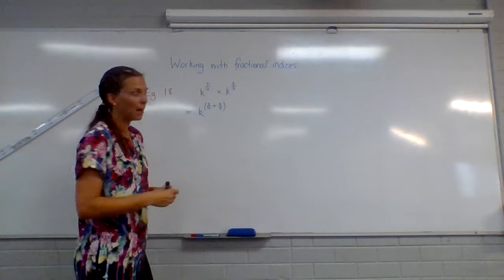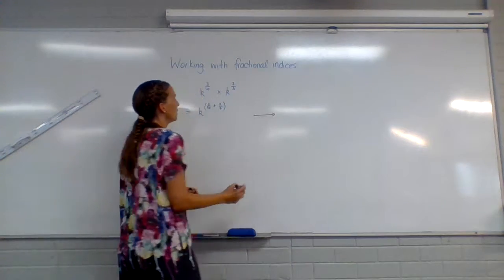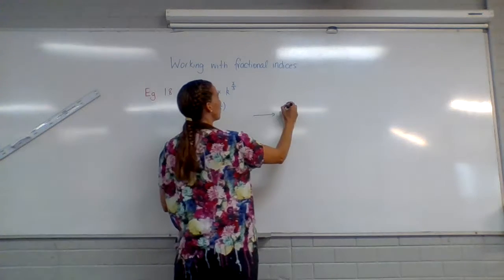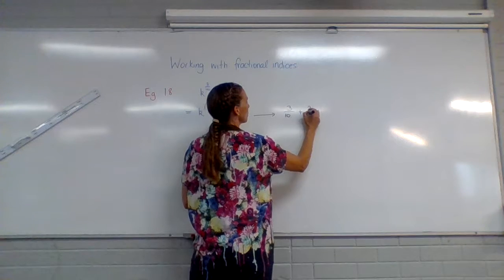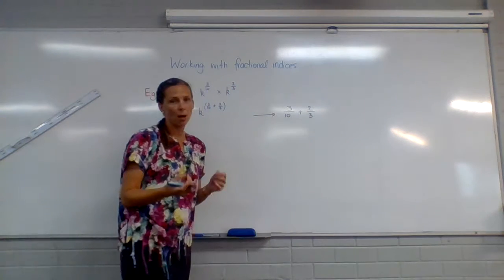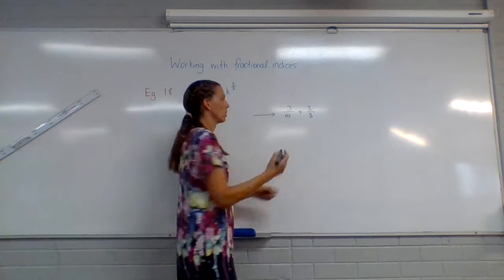So if you want to do it by hand, I'll just break that over to this side over here. We need to work out a few things. So 3 tenths plus 2 thirds. We want to work out what a common denominator is. So what do 10 and 3 both go into, which would be 30.